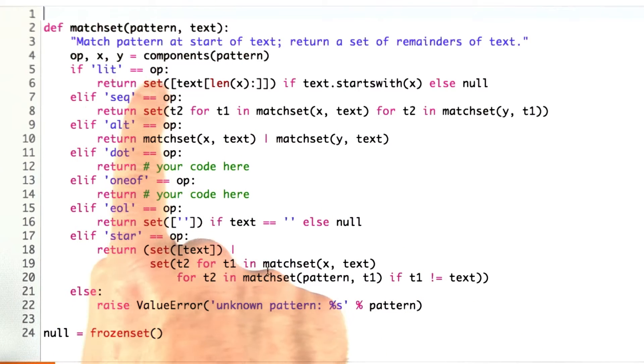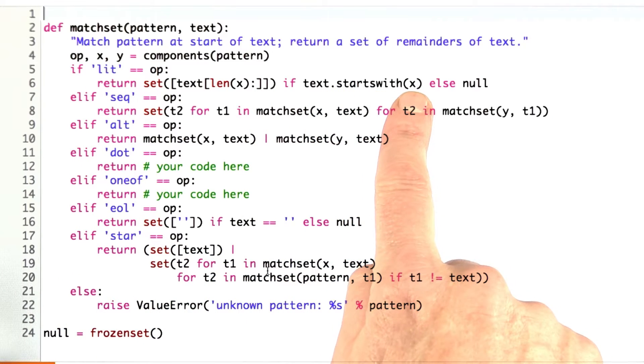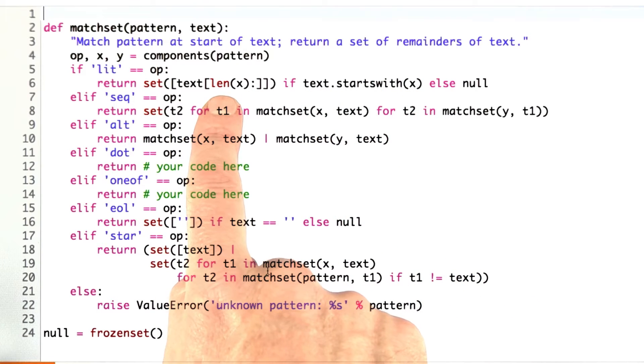For example, if the operator is asking for a literal string x, we ask, does the text start with x? If it does, then the remainder will be a singleton set, a set of just one element, which is the remainder of the text after we've broken off the length of text characters.